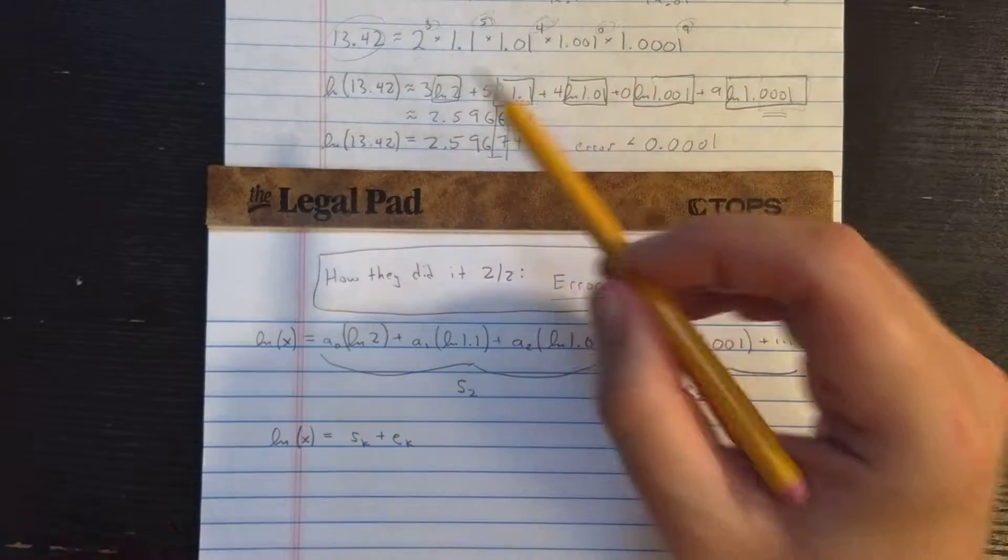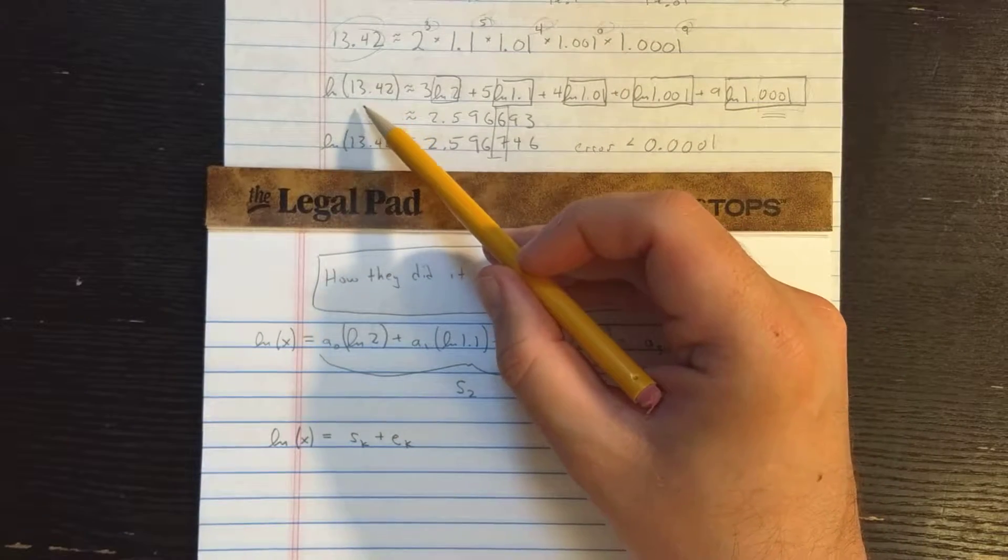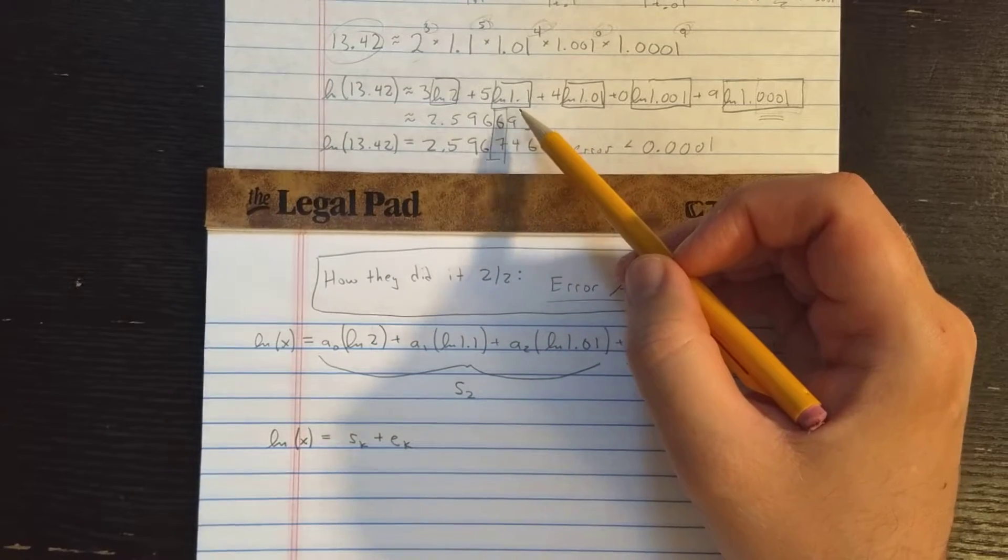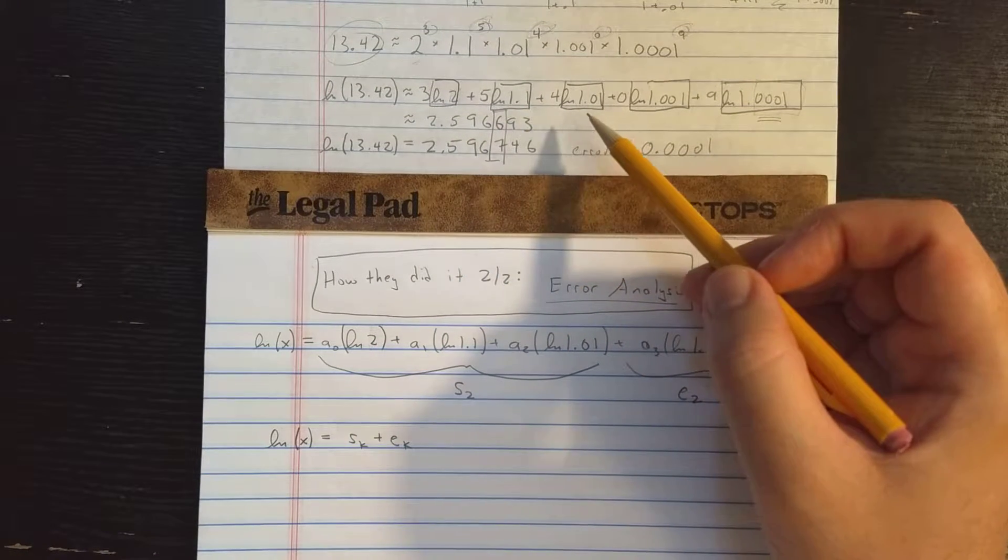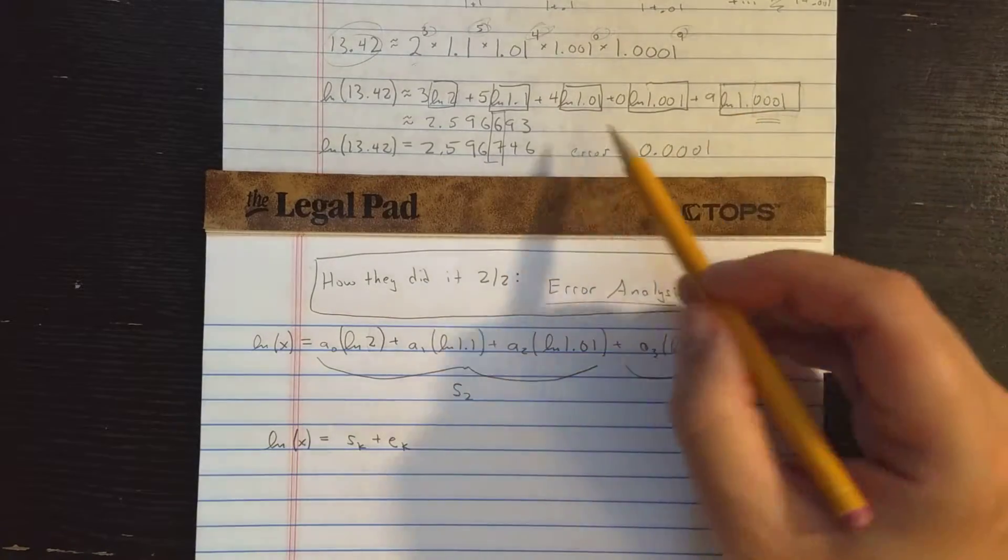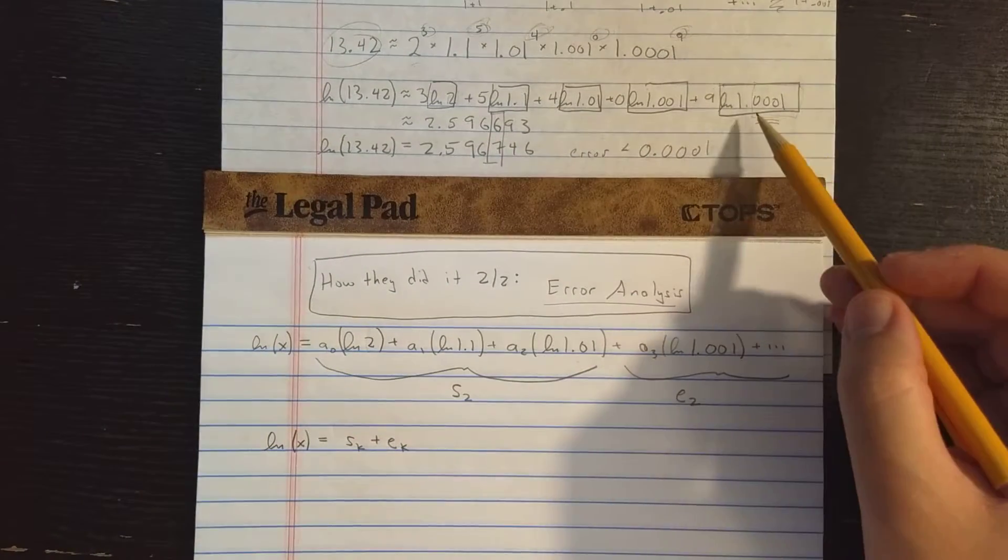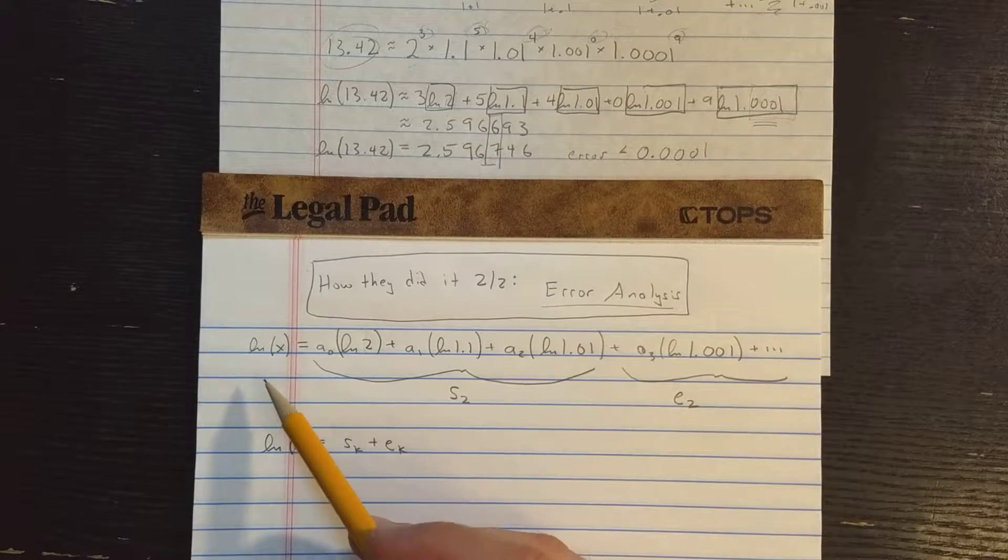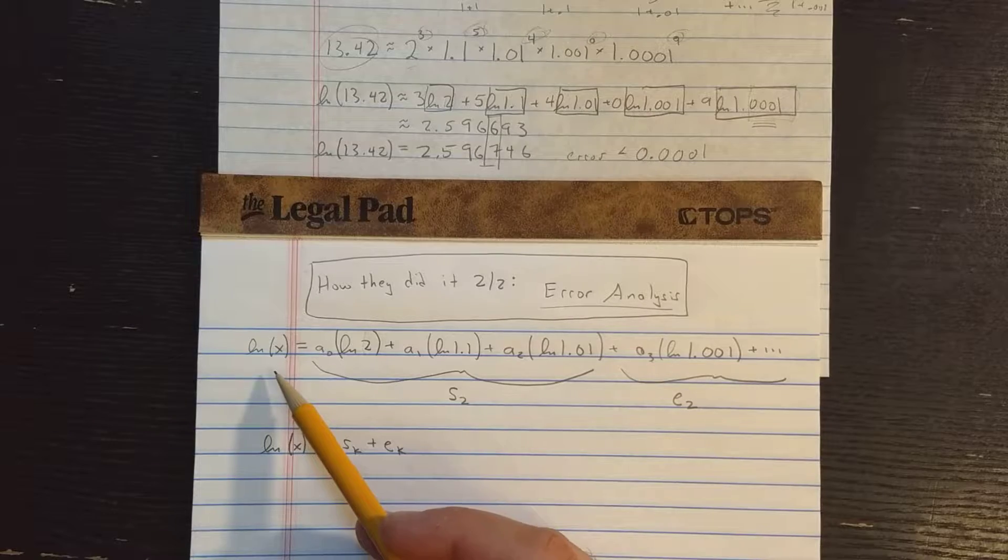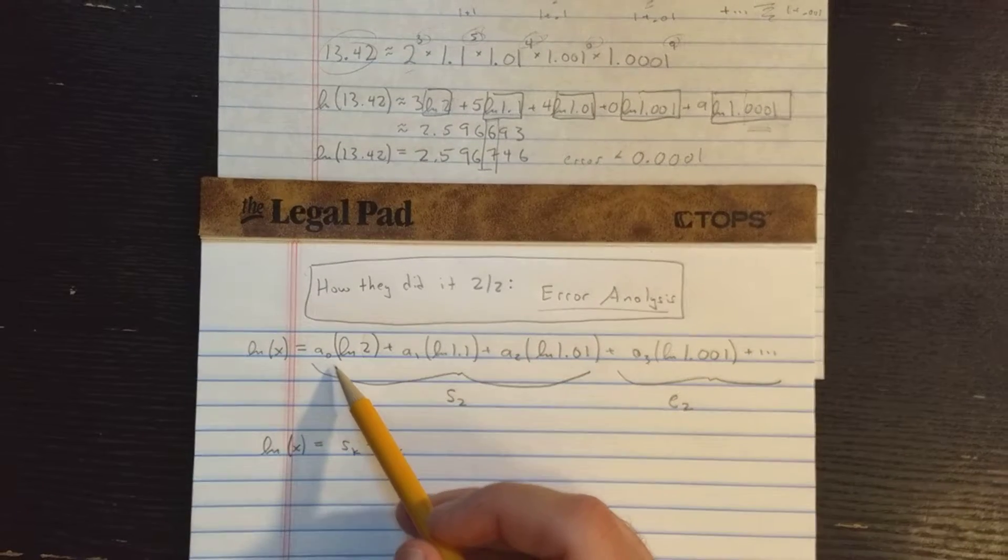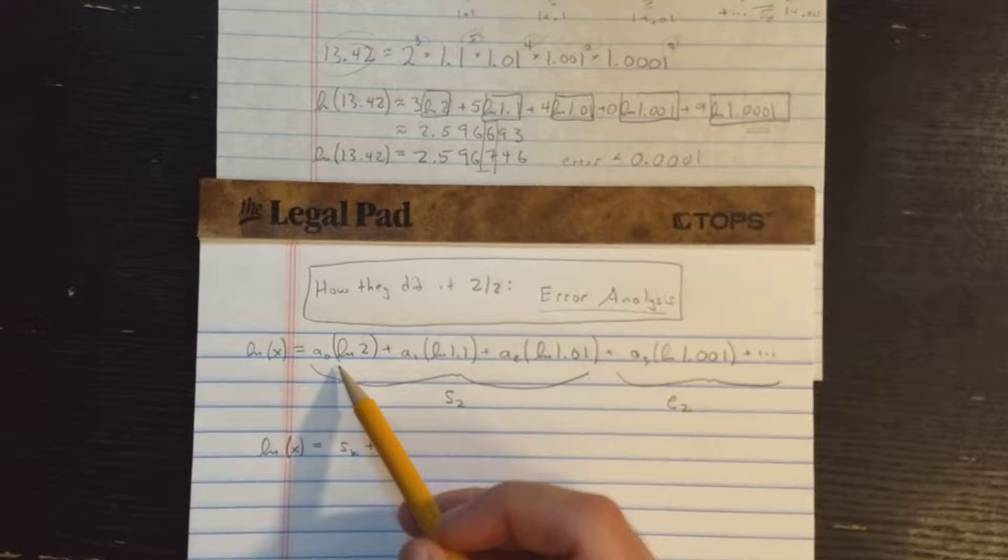So in the previous video, I did this approximation of natural log of 13.42 as 3 times ln2 plus 5 times ln1.1, 4 times ln1.01, and so on. And so I went out here until I got to 9 times ln1.001. So you can think of this as lnx as being made into a series. We have a series expansion here. It's not exactly a power series or a Taylor series.